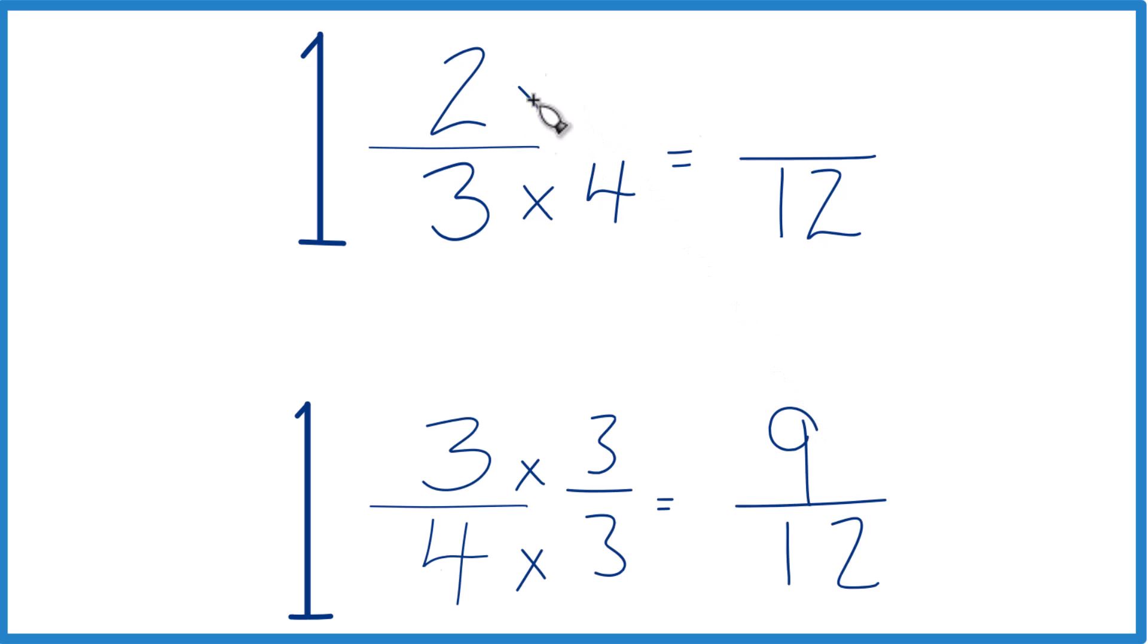Up here, let's multiply 2 times 4, so we have 4 over 4. 2 times 4 is 8. 8 twelfths, same thing as 2 thirds.